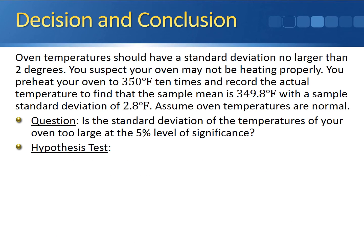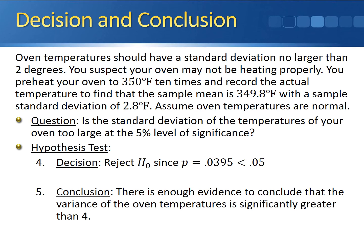We have the p-value, so we can make our decision and come to a conclusion. We're going to reject the null hypothesis because the p-value of 0.0395 is less than our level of significance of 0.05. As a result, there is enough evidence to conclude that the variance of the oven temperatures is significantly greater than 4. What this also means is that the standard deviation of the temperatures of your oven is too large—it's larger than the recommended value of 2 degrees. But since this is a chi-squared test for a population variance, our conclusion should be in terms of the variance.